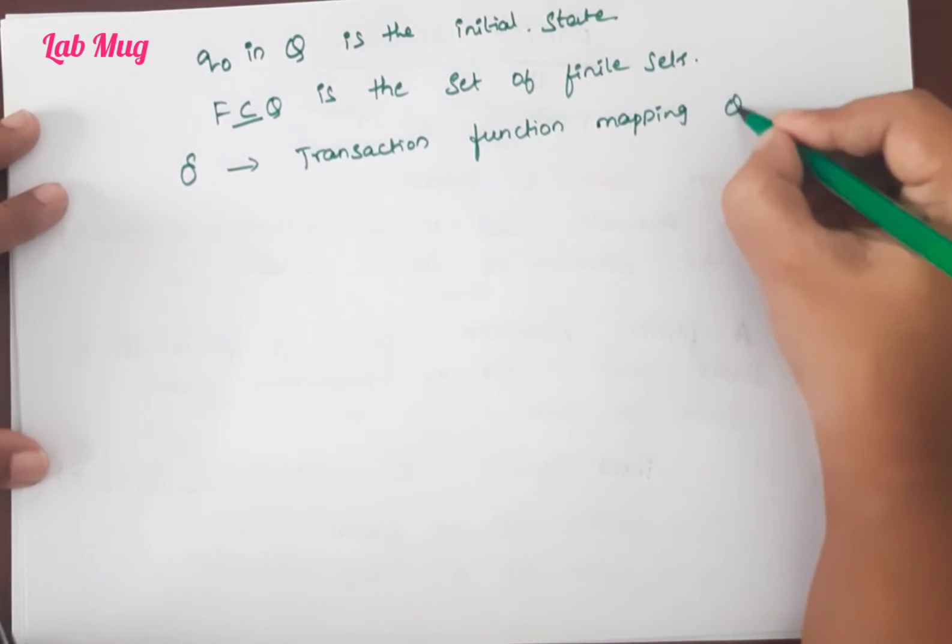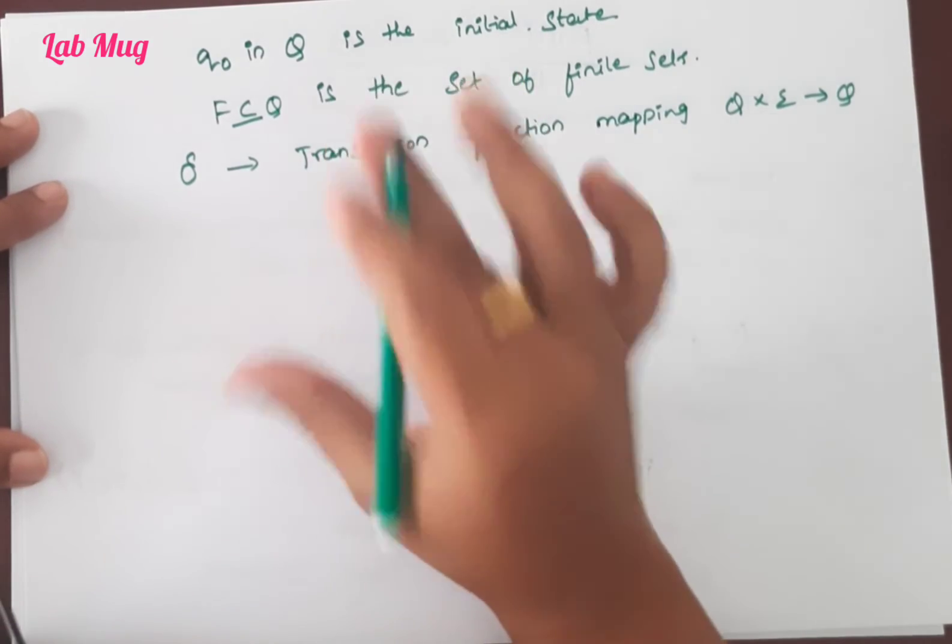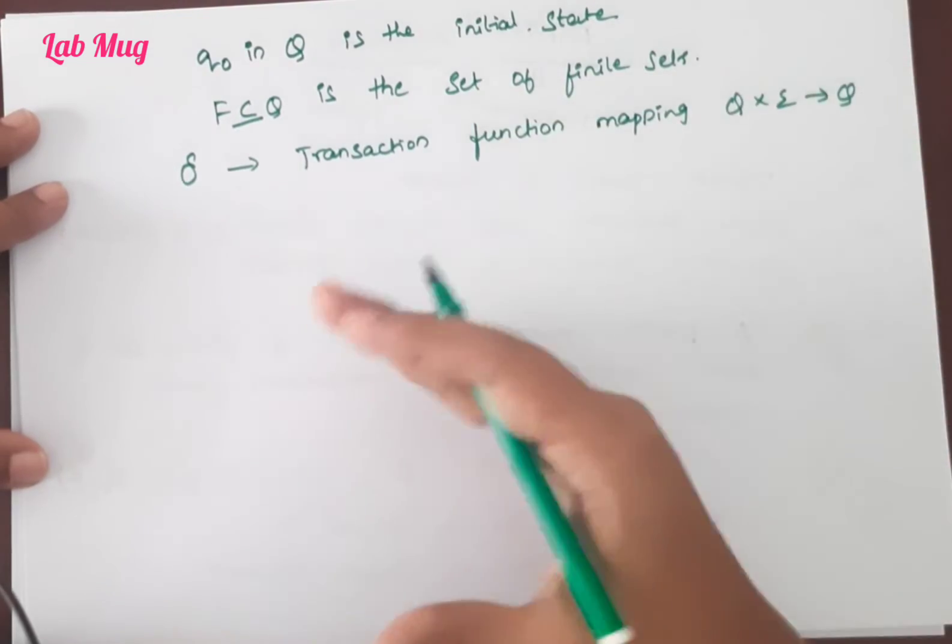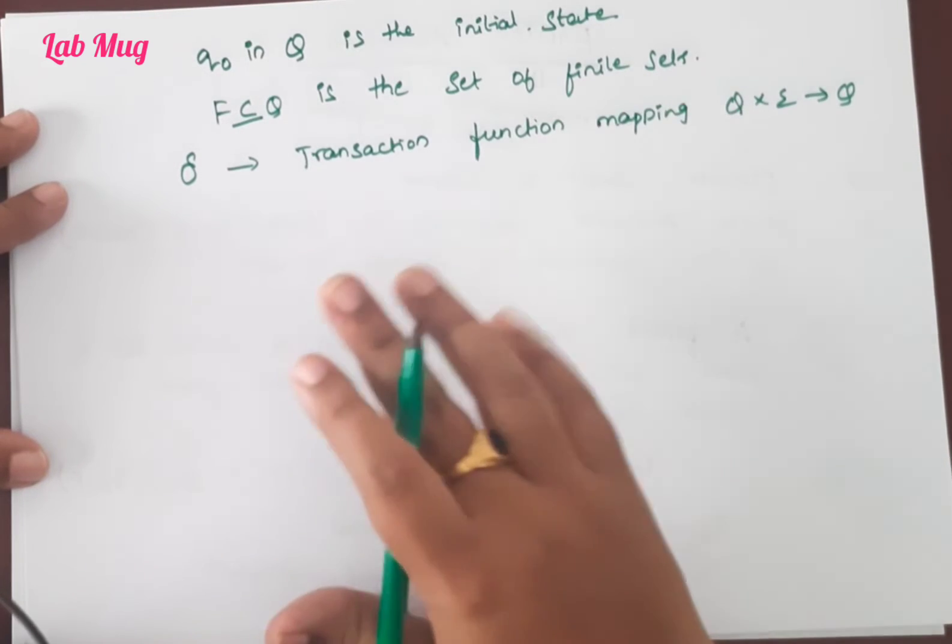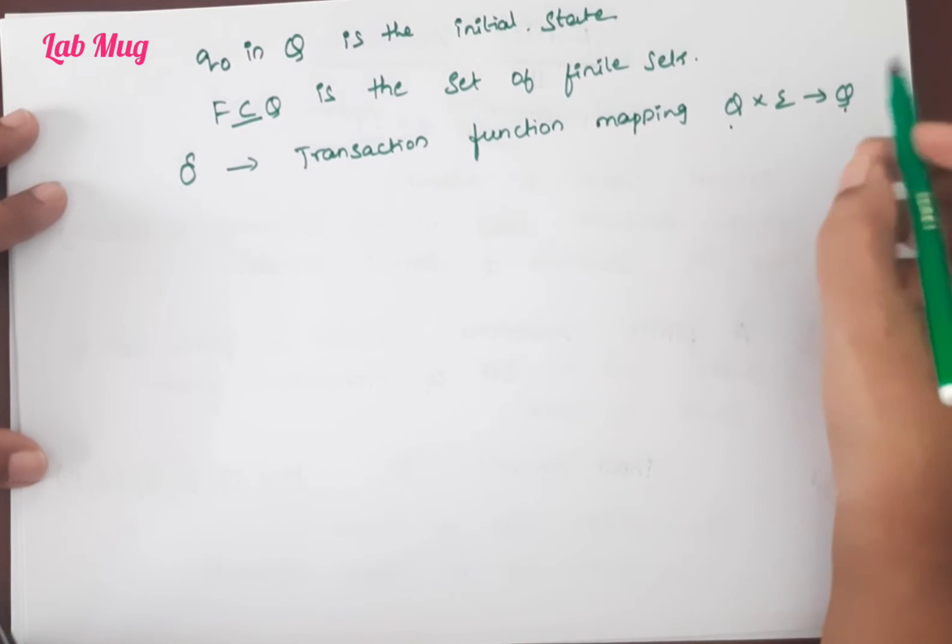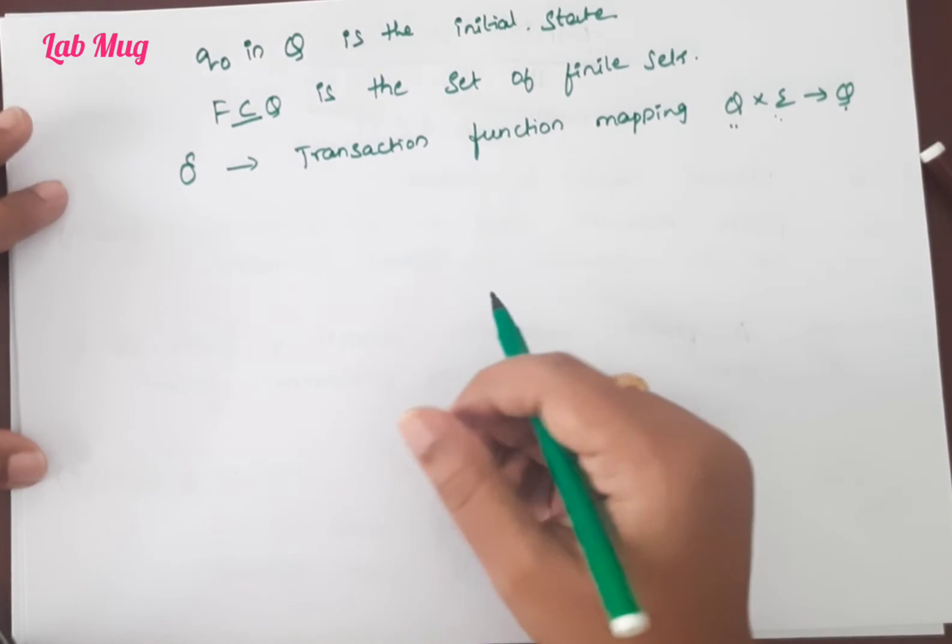Mapping is Q × Σ → Q, subset from Q. We take input symbols. For example, suppose you are in one city and you want to travel from that city to another city based on some input - you take a vehicle, some direction. To reach from one state to various states, you use some input symbols. So one state with one input symbol is going to another state. That is the transition. I'll explain with an example in the next class.